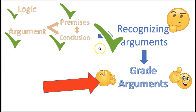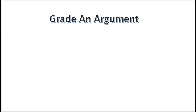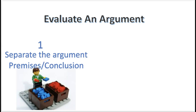Now that we know how to recognize arguments — and one thing I forgot to mention is key words, or premise and conclusion indicators from the last video, which is a good way to recognize an argument — let's jump right into grading arguments. Are arguments good or bad? It's very important. If you're grading an argument, there are two things you need to do: separate the premise and the conclusion — you already know that.